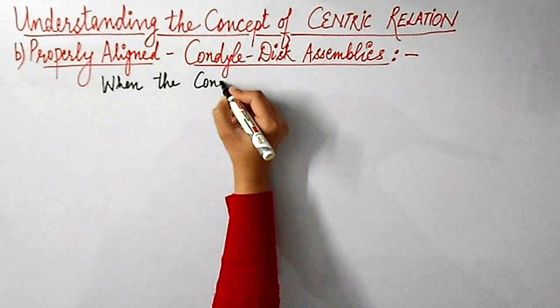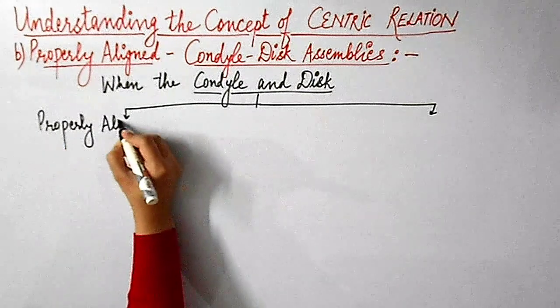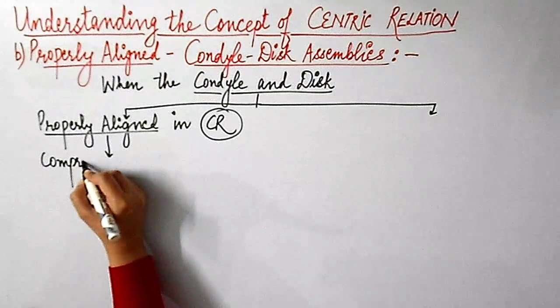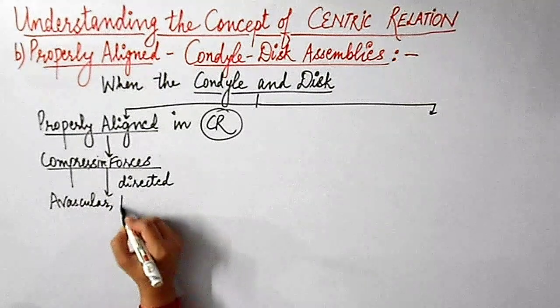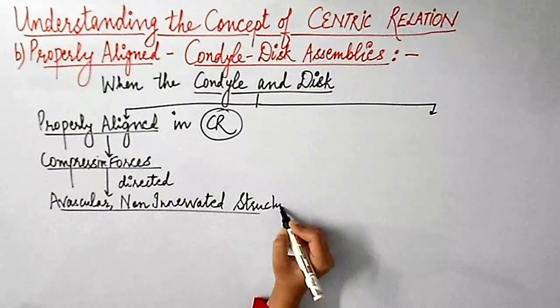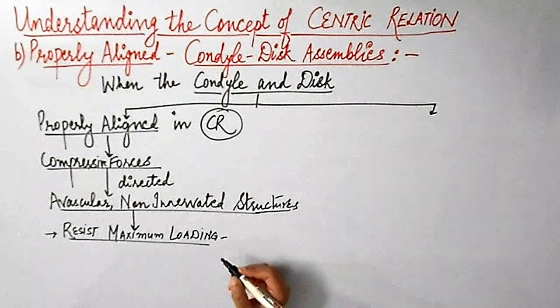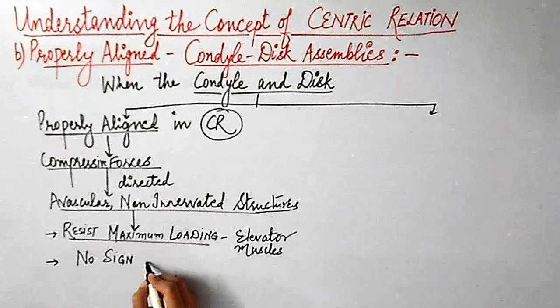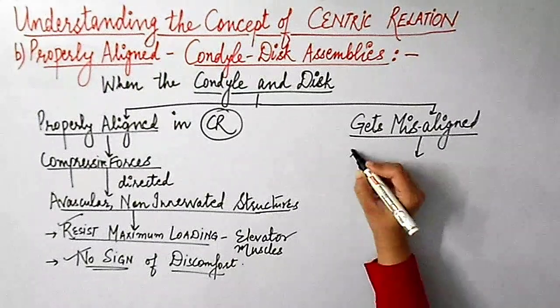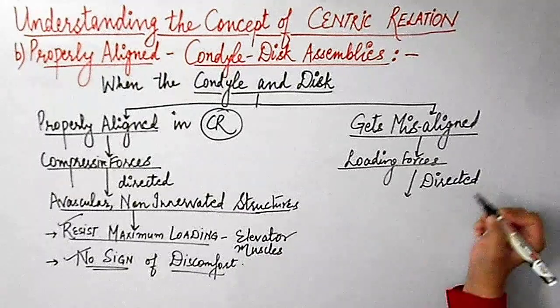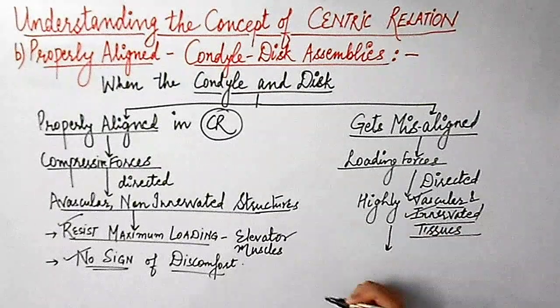Now the second part of the definition of centric relation is the properly aligned condyle disc assemblies. When the condyle and disc are properly aligned in centric relation, all the loadings, that is all the compressive forces, are directed through the avascular and non-innervated structures. These avascular and non-innervated structures are designed to accept the loading. Hence, a properly aligned condyle disc assembly can resist maximum loading by the elevator muscles, and that also with no signs of discomfort. Whereas on the other hand, if the condyle disc assembly is not properly aligned, that means if the disc gets misaligned, all the loading forces are directed through the highly vascularized and innervated tissues that ultimately respond with pain or discomfort.